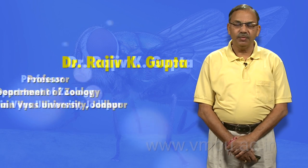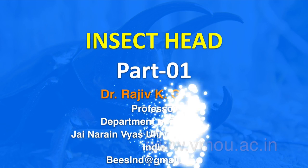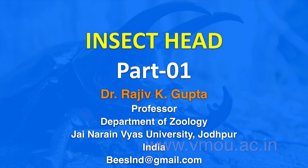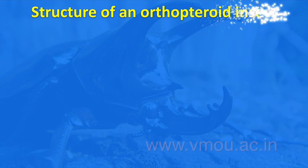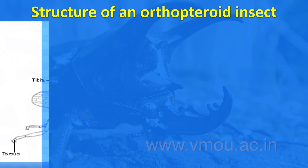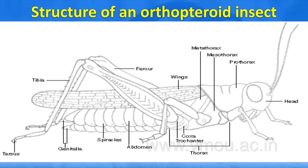Today, we will discuss about the configuration and concentration of the insect head, the foremost region. If you observe an orthopteroid insect, then you can find out the head, the thorax and the abdomen in this sequence of figure.